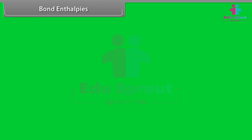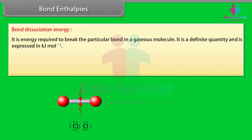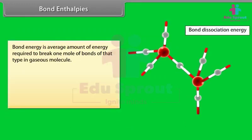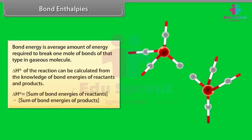Bond enthalpies. Bond dissociation energy is defined as the energy required to break a particular bond in a gaseous molecule; it is a definite quantity expressed in kilojoules per mole. In a diatomic molecule, bond dissociation energy is the same as bond energy, but in a polyatomic molecule having more than one similar bond, the two terms differ. Bond energy is the average amount of energy required to break one mole of bonds of that type in a gaseous molecule. ΔH° of a reaction can be calculated from the bond energies of reactants and products.